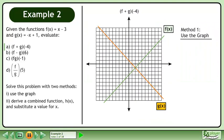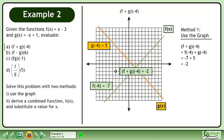First, we will solve this problem using the graph. f equals negative 7. Draw a point on the graph of f at negative 4, negative 7. g equals 5. Draw a point on the graph of g at negative 4, 5. Add the y values to get negative 2. The notation reads: f plus g at negative 4 equals negative 2.